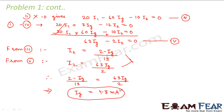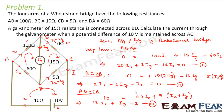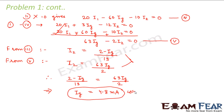So 4.8 milliamperes is the value of the current that will flow through the galvanometer. This shows how useful Kirchhoff's law is — it helps us solve complicated circuits, circuits where the Wheatstone bridge condition fails, and circuits where Ohm's law alone fails. Whenever you have closed loops, Kirchhoff's law is there to help you.